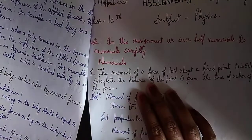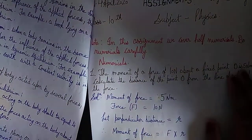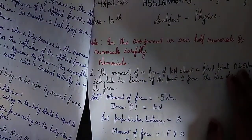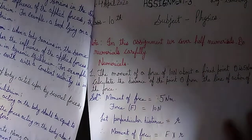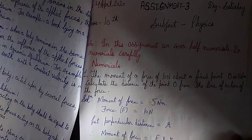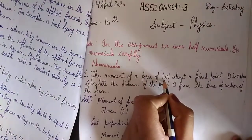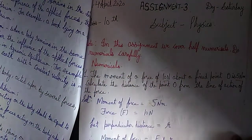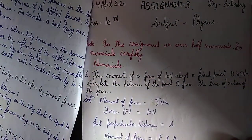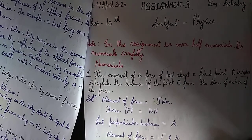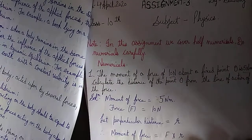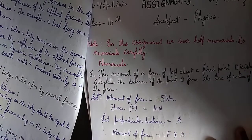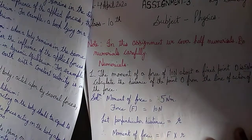The moment of a force of 10 N about a fixed point O is 5 N·m. Calculate the perpendicular distance. You need to revise numerical problems of this type — simple numericals where moment of force equals 5 N·m and force equals 10 N, and you solve for the perpendicular distance.